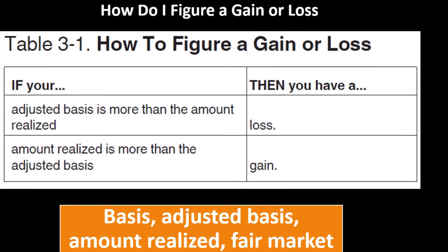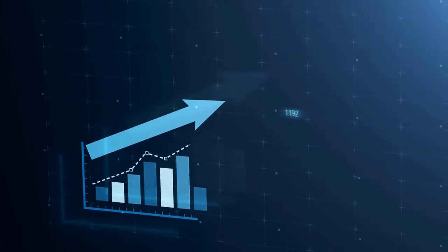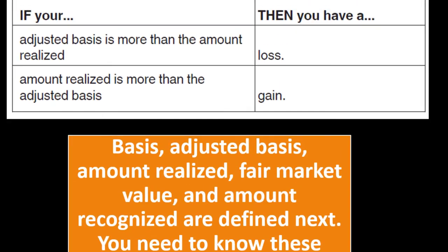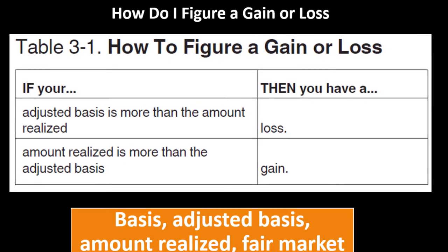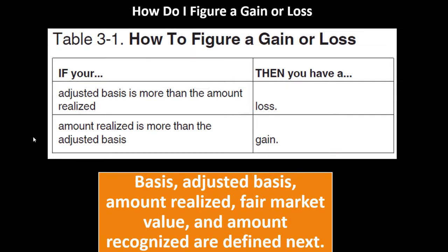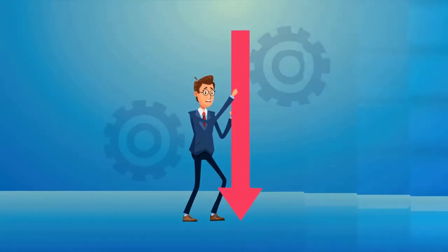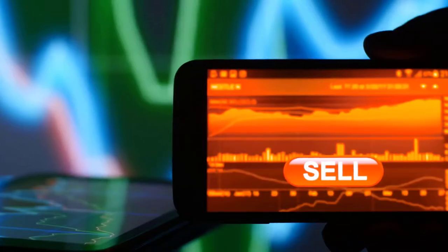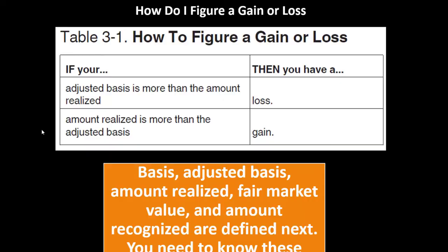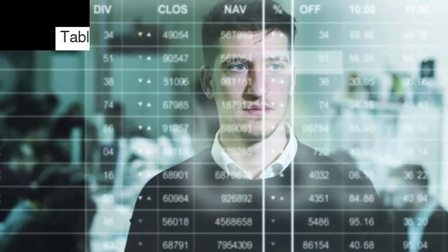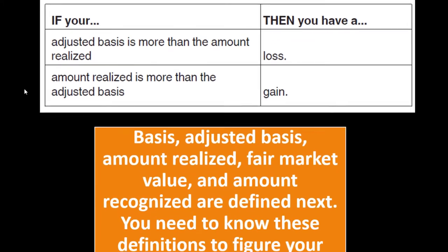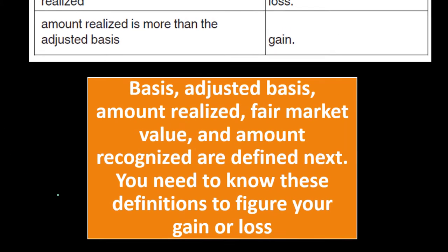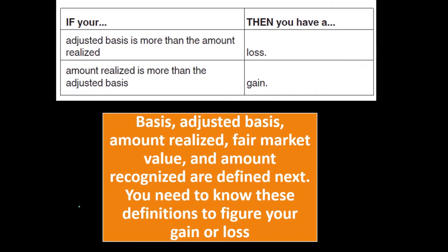The higher the basis, generally the better, because when you sell you'll have less of a gain — and gains mean more taxes owed. As depreciation occurs, your adjusted basis goes down because you're consuming that tax benefit. When you sell, if there's a gain, it's larger than it might have been. Key terms to know: basis, adjusted basis, amount realized, fair market value, and amount recognized.